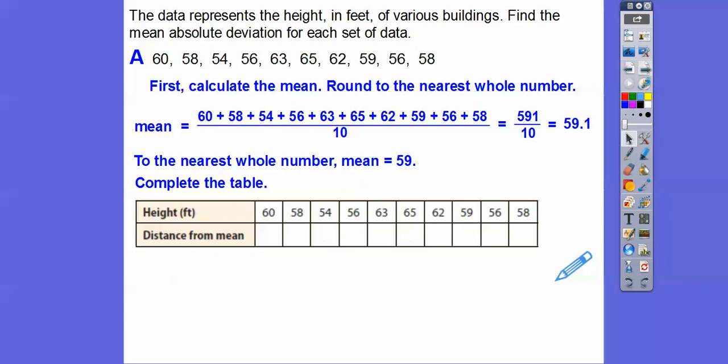Now what we're going to do is complete this table. This is going to be the distance from the mean. So each number, how far is 60 away from 59? It's 1. So we're going to do 60 minus 59 equals 1. And we always do absolute values because distance is always positive.